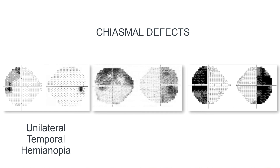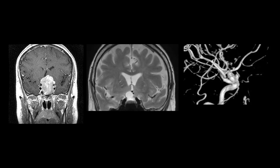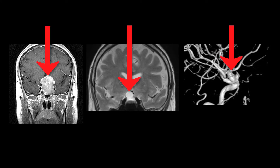These three types of chiasmal visual field defects — unilateral temporal hemianopia, junctional defect, and bitemporal hemianopia — are most often caused by mass lesions, which are tumors, cysts, and aneurysms.